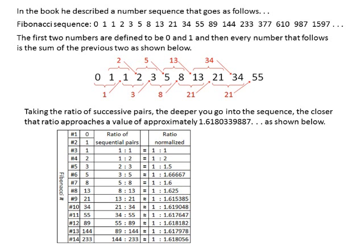We'll turn on our laser pointer. Here we have the first two numbers, 1 and 1, the ratio is 1. Then 1 and 2, the ratio is 1 to 2. 2 and 3, the ratio is 1 to 1.5. Then we start getting interesting. Here we have 3 to 5 is the same as 1 to 1.66667. And going down, we see that as we get progressively deeper into the sequence, we start approaching this number 1.618, followed by a bunch of other numbers.